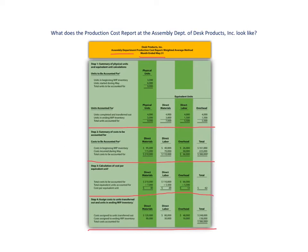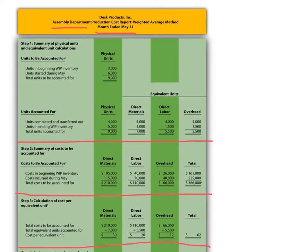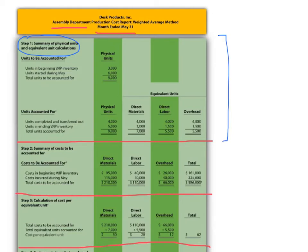Let's zoom in a little bit so you can see the information being provided here. Step one shows us the summary of the physical units and equivalent unit calculations. The information includes the physical units that were completed and transferred out and those in ending work in process inventory. Then it shows those physical units converted to equivalent units for direct materials, direct labor, and overhead.